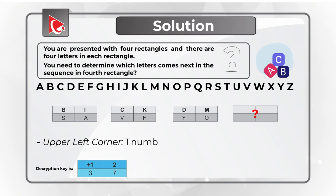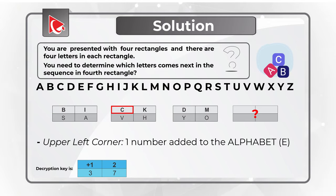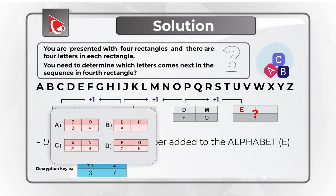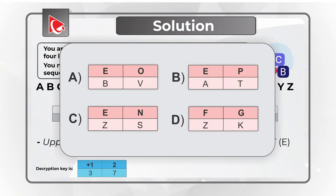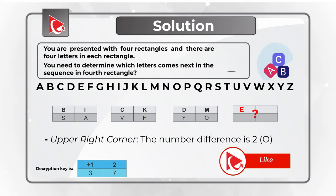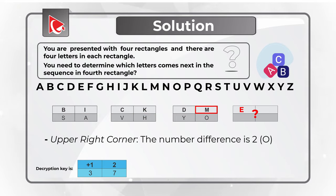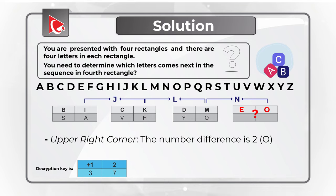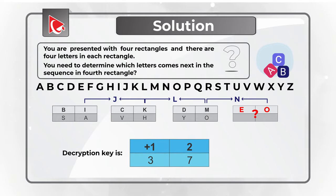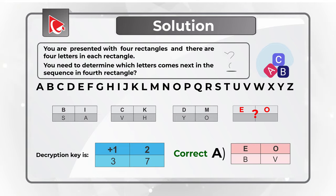Looking at the upper left corner of the rectangles, the letters are B, C, D — matching the alphabet 1 to 1 — so the next letter is E. In the upper right corner, the letters are I, K, M, with an increment of 2, so the next is O. Choices A, B, and C all have E in the upper left, but only choice A has both E and O in the upper row, confirming choice A is correct.